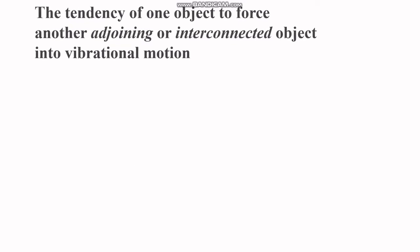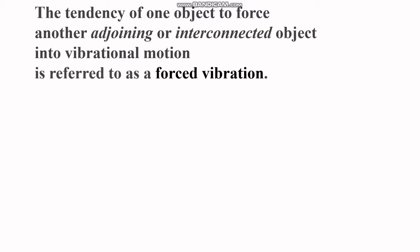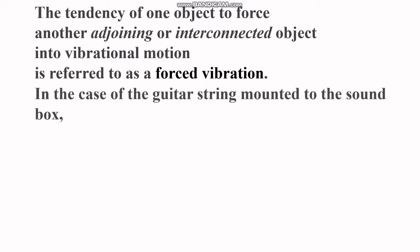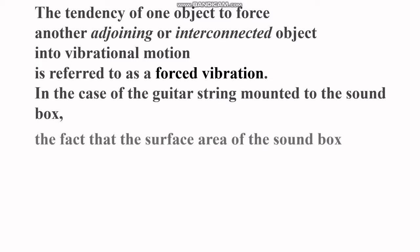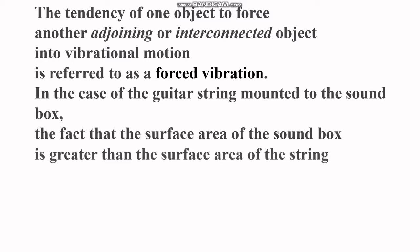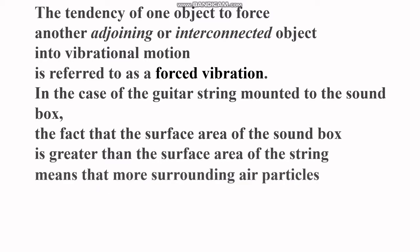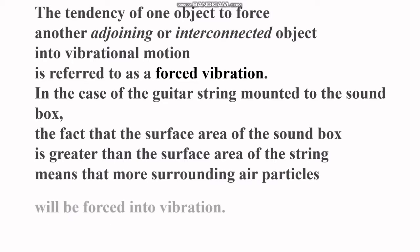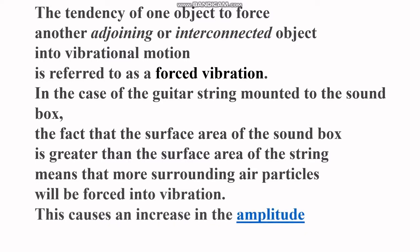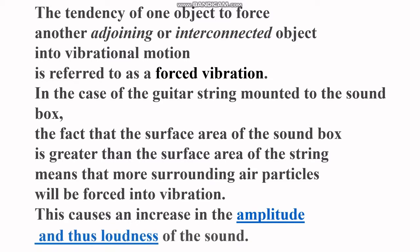The tendency of one object to force another adjoining or interconnected object into vibrational motion is referred to as a forced vibration. In the case of a guitar string mounted to the sound box, the fact that the surface area of the sound box is greater than the surface area of the string means that more surrounding air particles will be forced into vibration, causing an increase in the amplitude and thus loudness of the sound.